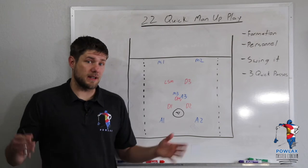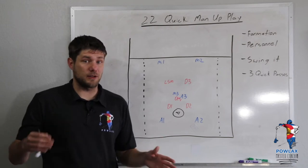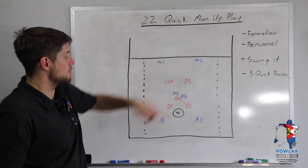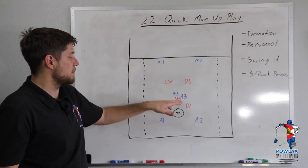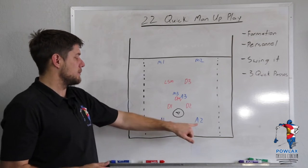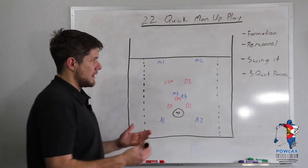Now as we get into the play, the first thing we've got to discuss is our formation. It's just our standard 2-2-2. We're going to have two midis up top who are going to be wide just under the restraining line. We're going to have a midi and attackmen on the crease and they're going to be tight. And then the two attackmen below GLE who are going to be to the left and the right of X.